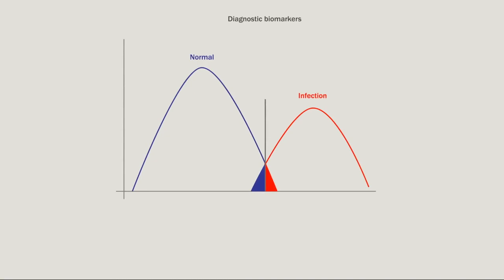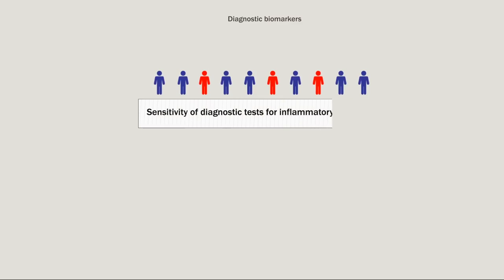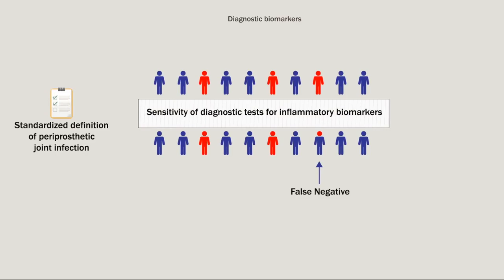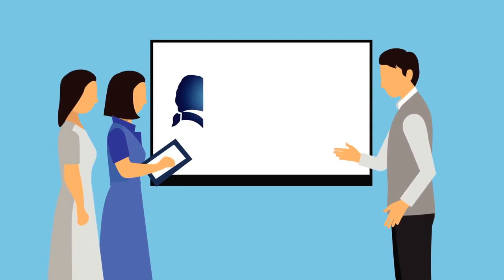In order to be effective, these diagnostic markers need to have low false positive rates. However, the sensitivity and other diagnostic measures of these tests, using a standardized definition of periprosthetic joint infection and the influence of infectious organisms on these inflammatory markers, remain inadequately investigated.